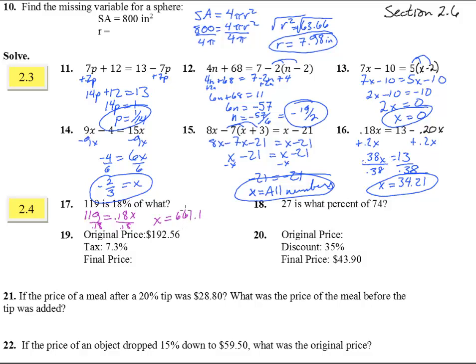Number 18. 27 is what percent of 74? If we go to solve this equation for x, we divide by 74, and we get that x equals 0.365. And then two decimal places there equals 36.5%.